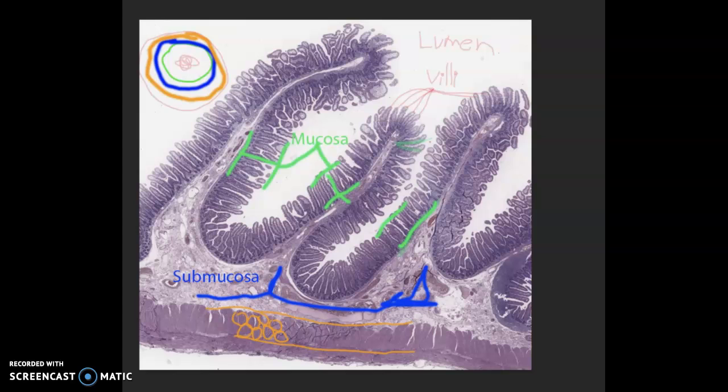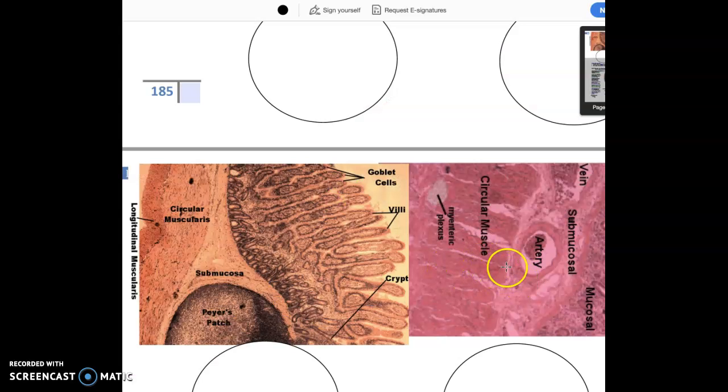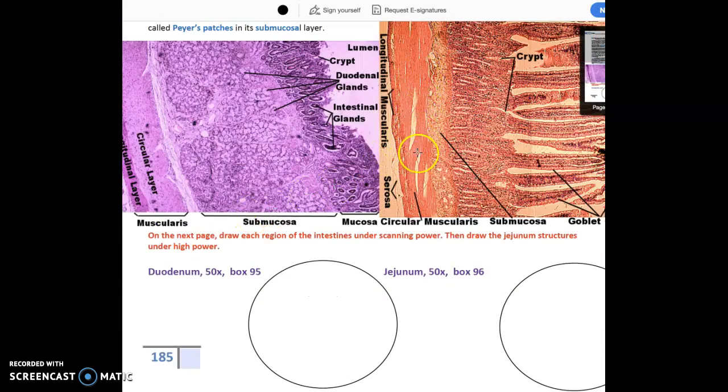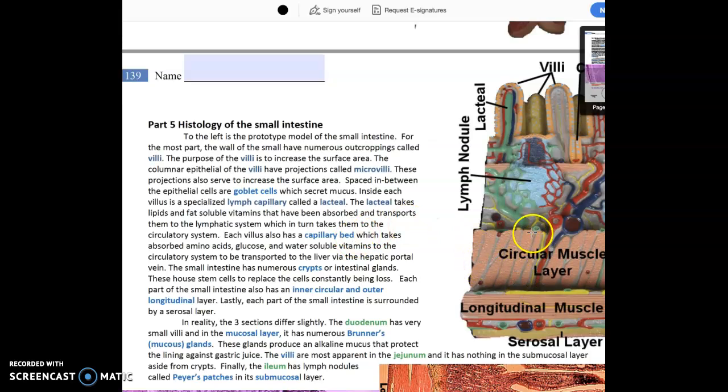So this is the circular muscularis. None of these show it clearly either. But this is the circular muscularis here. This is the circular muscularis. Again, it's not really showing it very clearly. This one sort of does. So they're like that. And they're coming out towards you.